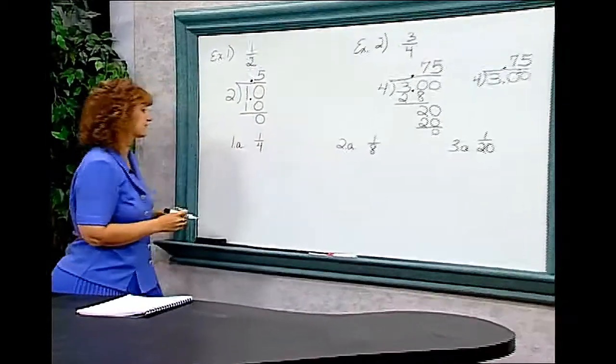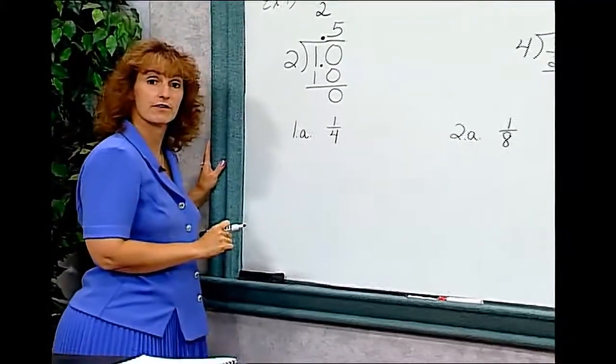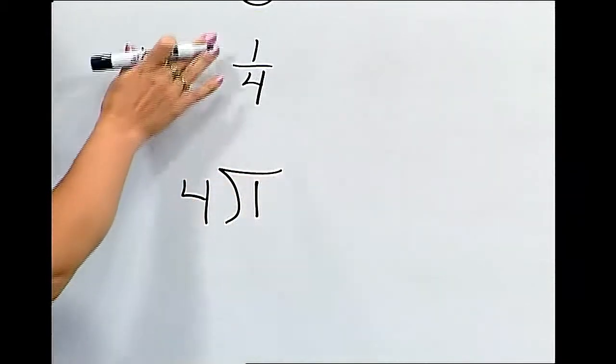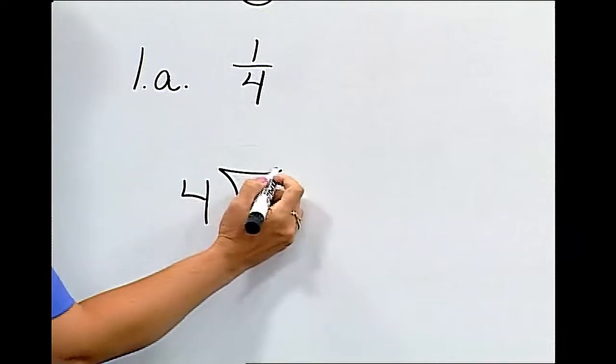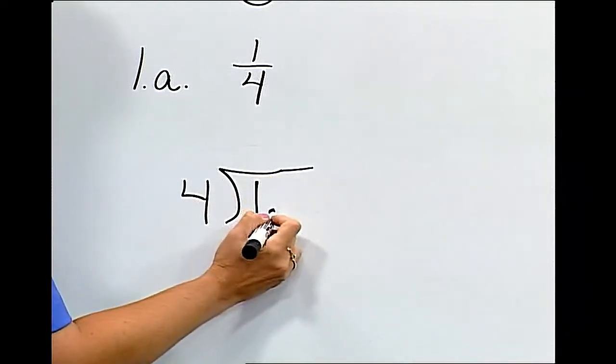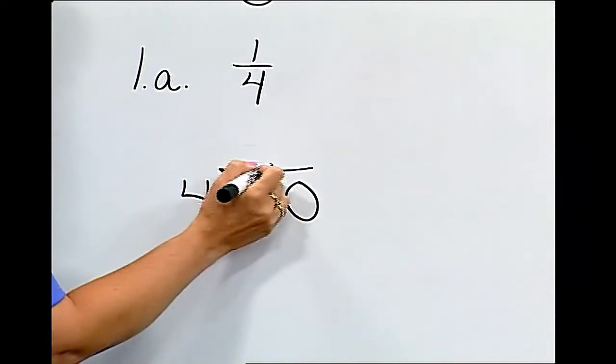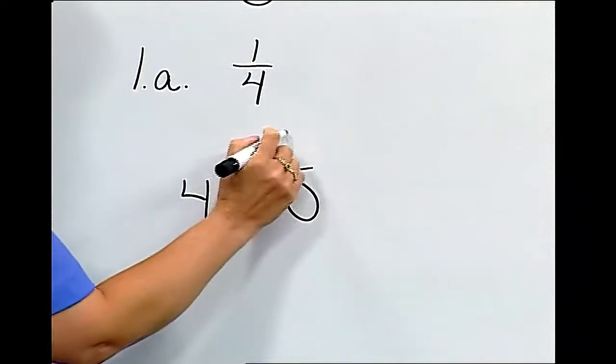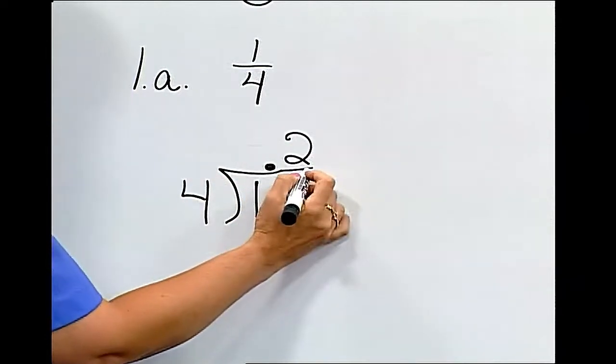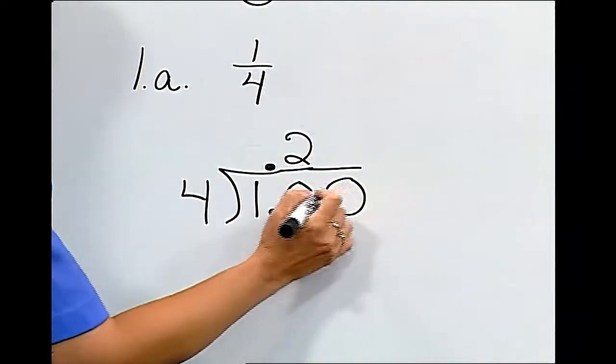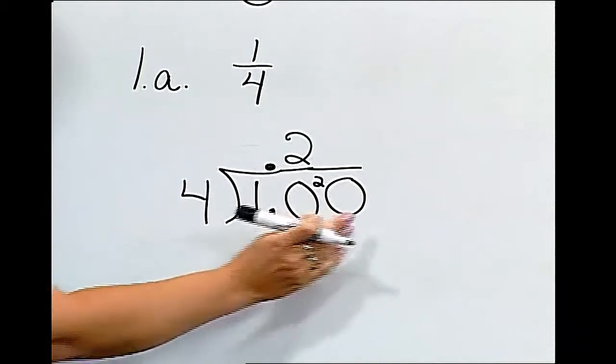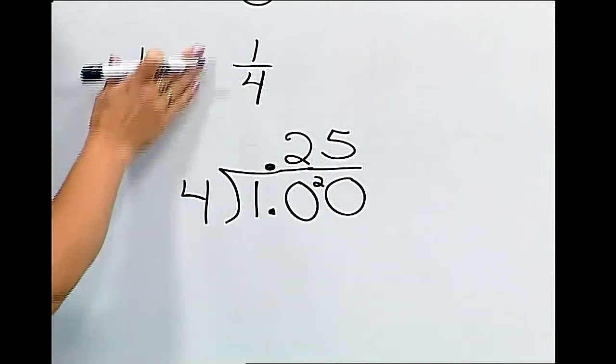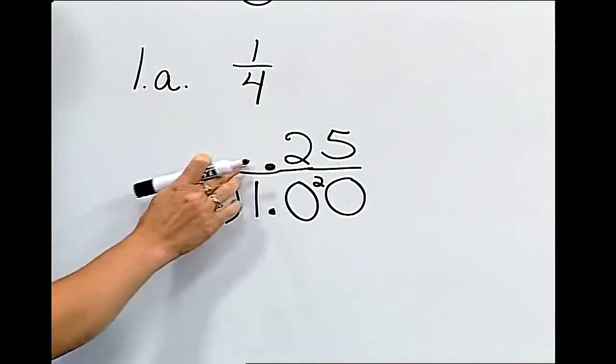Let's look at a few more examples. Let's change 1/4 into a decimal. 1 divided by 4. Remember that the numerator goes inside the division bar. I'm going to place a decimal point and a 0. Don't forget to bring that decimal point straight up. 4 goes into 10 2 times with 2 left over. Since I have left over, I'm going to place another 0 there. 4 goes into 20 5 times with nothing left over. So 1/4 is equivalent to 0.25.